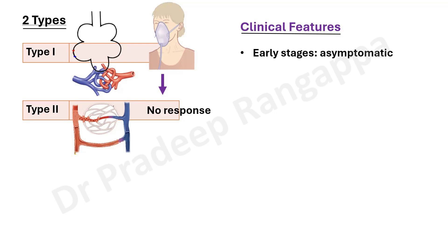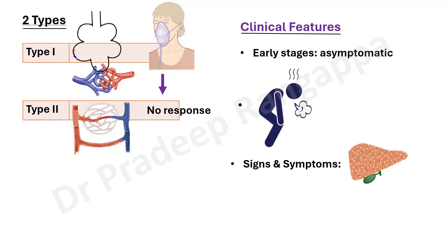Clinical features: in early stages patients are asymptomatic because in mild stages they are not hypoxemic. As the disease evolves they develop progressive dyspnea. There will be concomitant signs and symptoms of chronic liver disease. Portal hypertension should be present along with ongoing hypoxemia causing shortness of breath. The hallmark feature is orthodeoxia — patients are not hypoxemic when lying down, but develop a drop in oxygen saturation when they sit up.